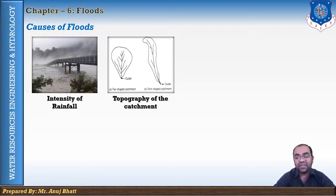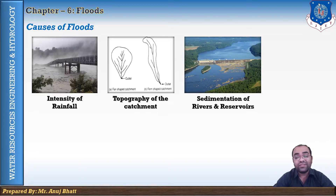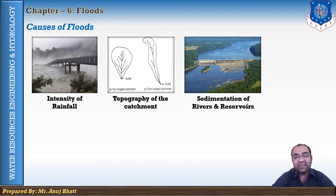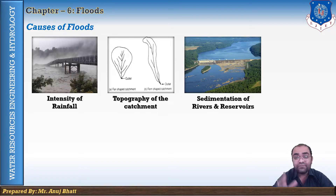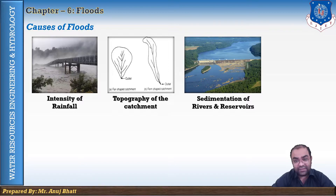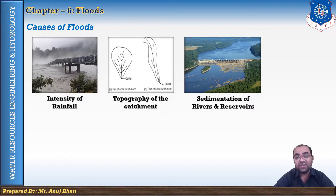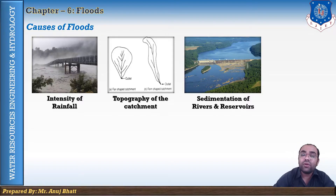The third cause is sedimentation of rivers and reservoirs. Reduction in the flood control capacity of a reservoir due to heavy silting will affect river flow. If a tributary carries a heavy sediment load, the river bed silts up gradually every year, reducing the carrying capacity of the river. Ultimately the cross-sectional area of the river becomes shallow and it is no longer able to carry high flood flows.